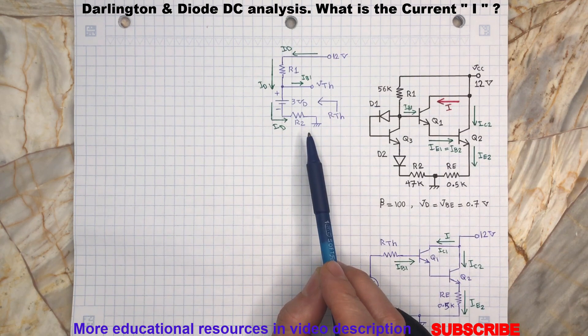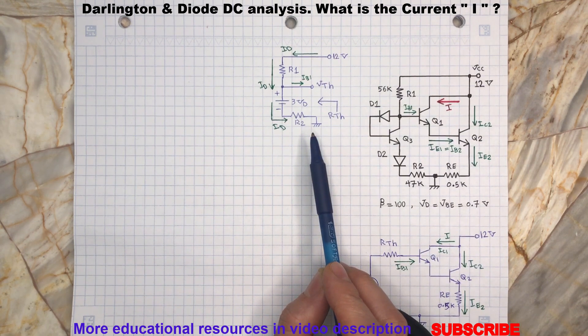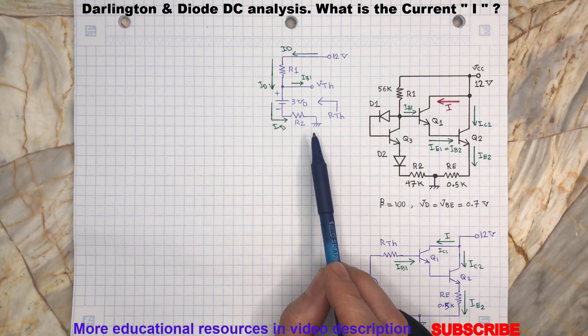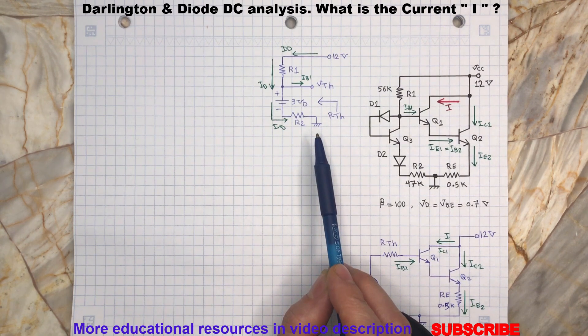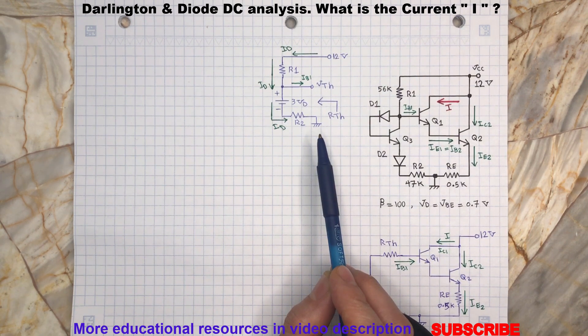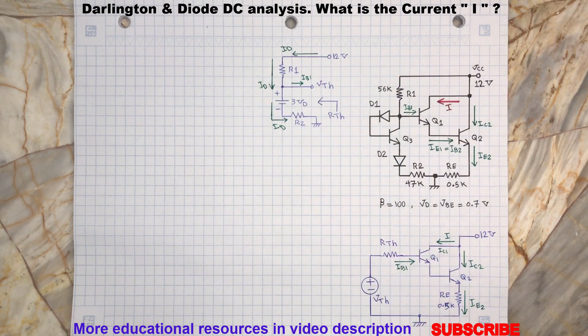Here is the simplified circuit seen from the base of Q1, and we need to disconnect this part from the rest of the circuit because we want to find the Thevenin equivalent. As you may notice, we model D1, D2, and the base-emitter junction of transistor Q3 with a voltage source with potential difference equal to three times Vd, which is about 2.1 volts.